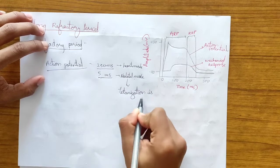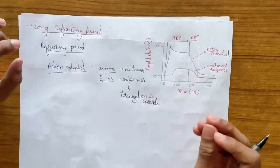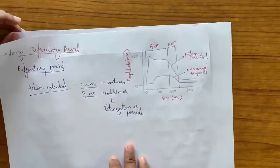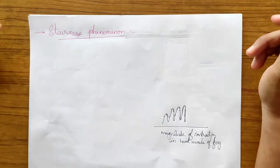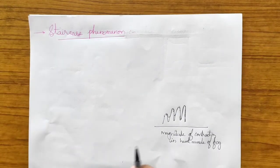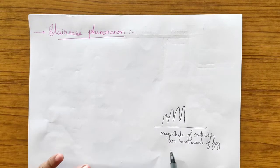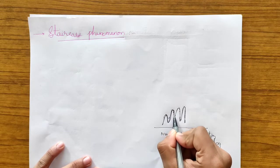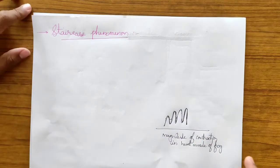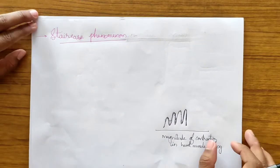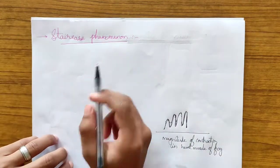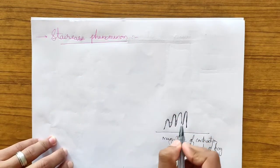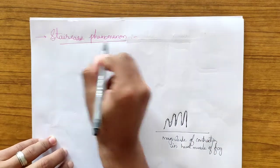Tetanization is possible in skeletal muscle but not in cardiac muscle. This acts as a safety measure for the heart so it can beat in a rhythmic fashion. Now let's talk about the staircase phenomenon. Looking at the graph of the magnitude of contraction in the frog heart muscle, you can see that the magnitude increases progressively. This happens due to the staircase phenomenon: when the resting heart muscle is stimulated repeatedly at intervals of less than 10 seconds, there is a progressive rise in the magnitude of contractions.